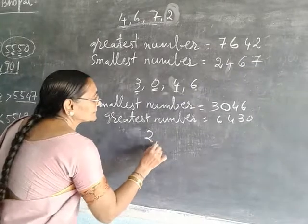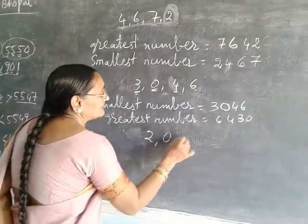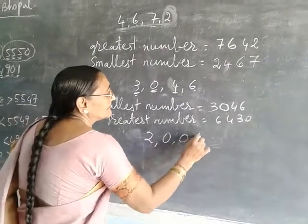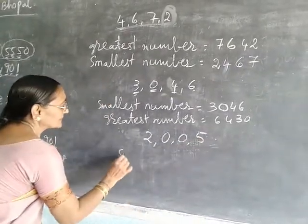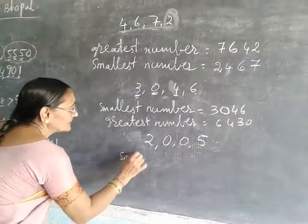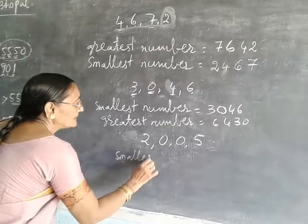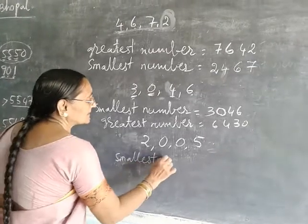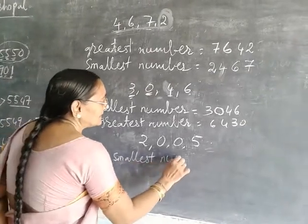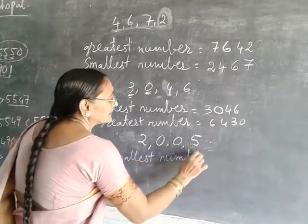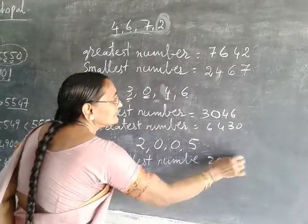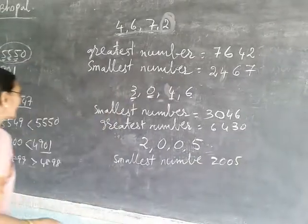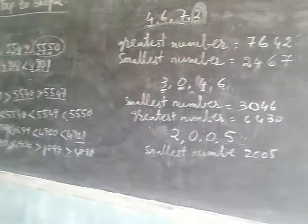Suppose two zeros are there in the digits. Same rule applies — what is the smallest number? That is two thousand.